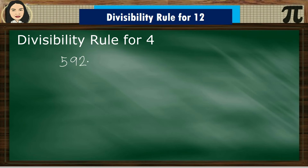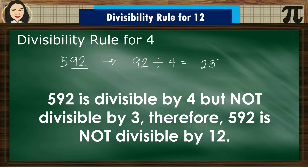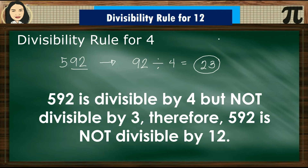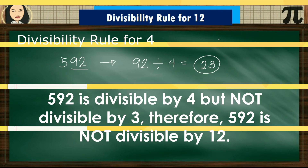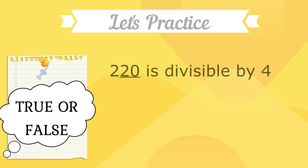For 592, the last 2 digits are 92. 92 divided by 4 equals 23, so 592 is divisible by 4, but not divisible by 3. Therefore, 592 is not divisible by 12.